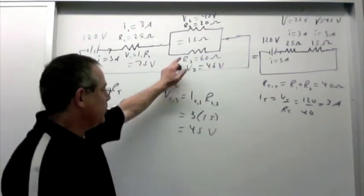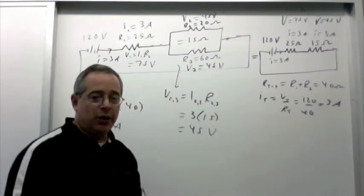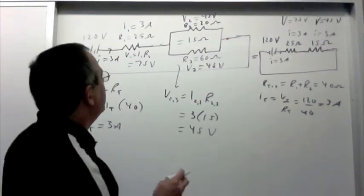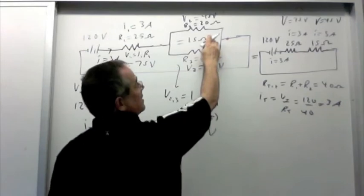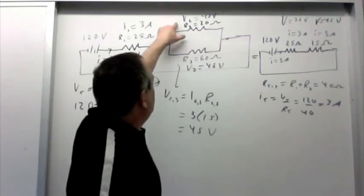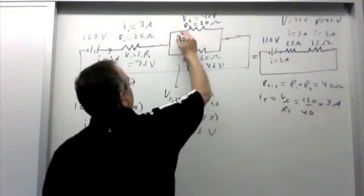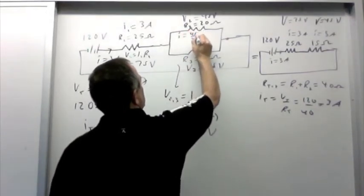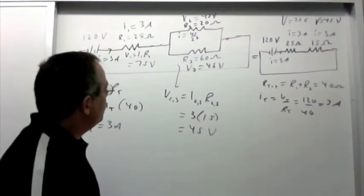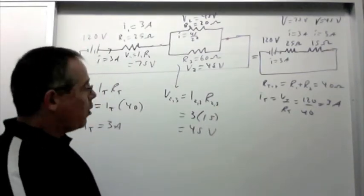And then once you have the voltage and the resistance, you're all set. Just find current using Ohm's law. I'm running out of room up there. Let's see. I'm going to erase this. We have a 20-ohm resistor whose voltage is 45 volts. So the current is V over R, 45 over 20.